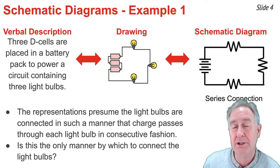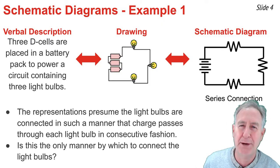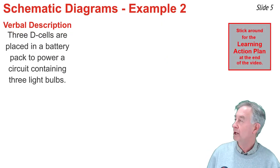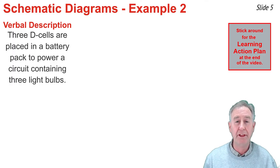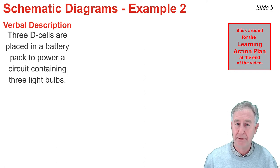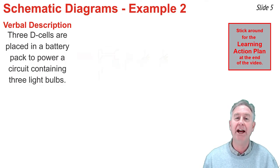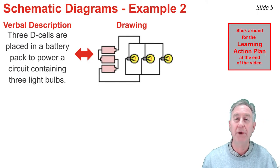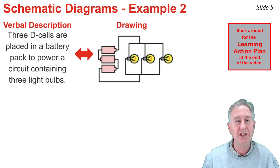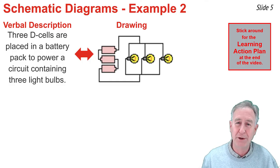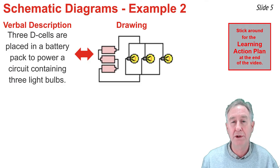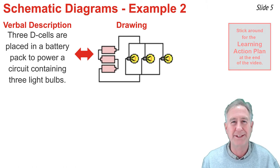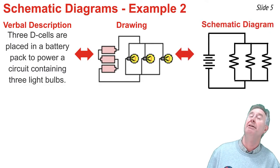But a series connection is not the only way to connect light bulbs. There's another way to connect them such that charge passes through only one light bulb. In this second example, I still have three D cells in a battery pack powering three light bulbs, but I'm going to arrange those light bulbs differently — not in the series fashion, but instead as shown by this drawing. The wire leading from the battery eventually comes to a point where there's branching, and each light bulb is in its own separate branch. I would represent this with a battery symbol, resistor symbols, and connecting wires, and that schematic diagram looks something like this.